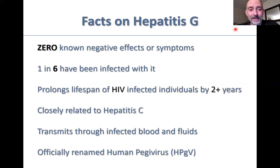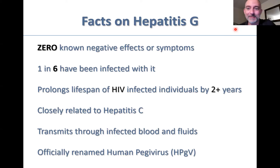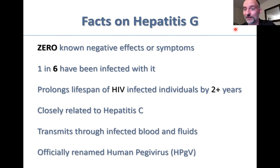A few more facts about hepatitis G: it's a virus not known to cause any negative effects. In fact, one in six people have been infected with hepatitis G and don't even know it. The study on HIV and hepatitis G co-infection found that people infected with hepatitis G lived on average over two years longer. Genetically, hepatitis G is closely related to hepatitis C, and its transmission routes are similar to sexually transmitted diseases—mainly through bodily fluids. It doesn't replicate in the liver, so it has been officially reclassified as the human pegivirus.